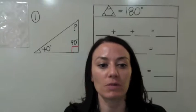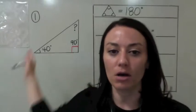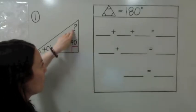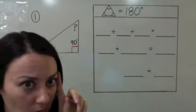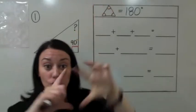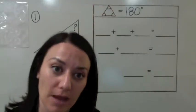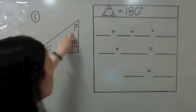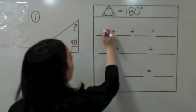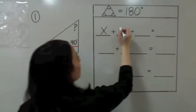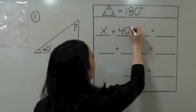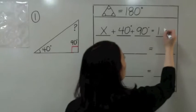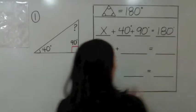When we don't know what something is, we're going to call it X — that's a variable, which means it's unknown. We're using algebra to solve for the missing angle. The three angles in a triangle add up to 180 degrees. So: X plus 40 degrees plus 90 degrees equals 180 degrees.